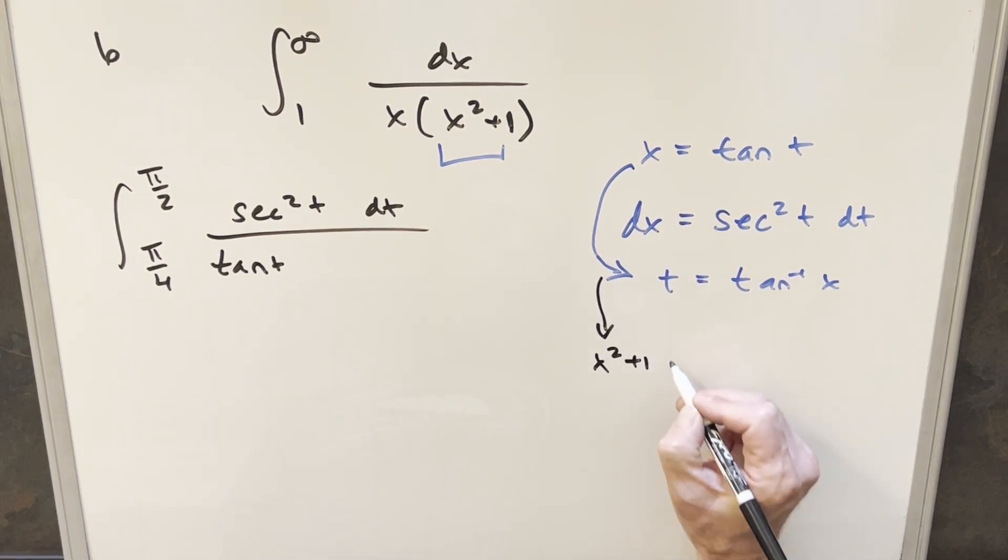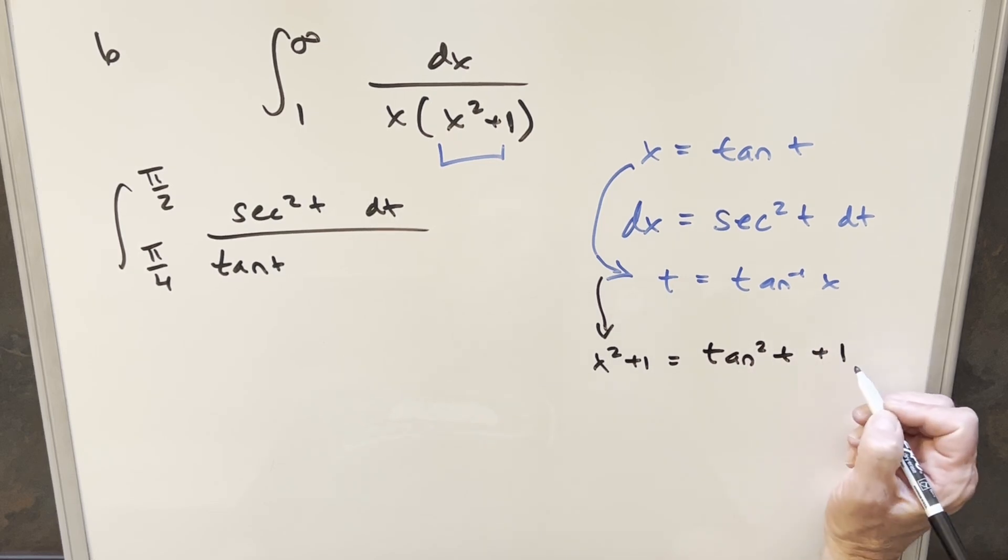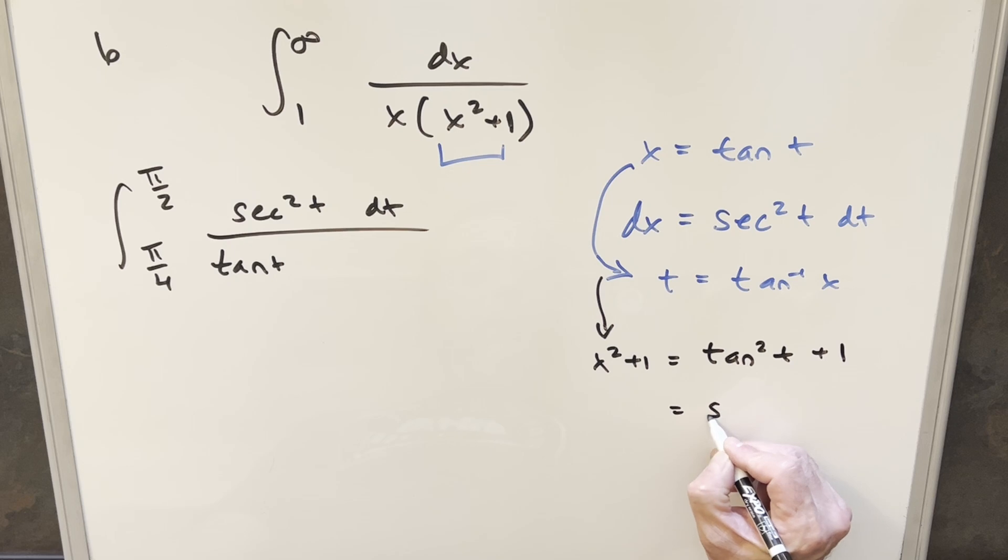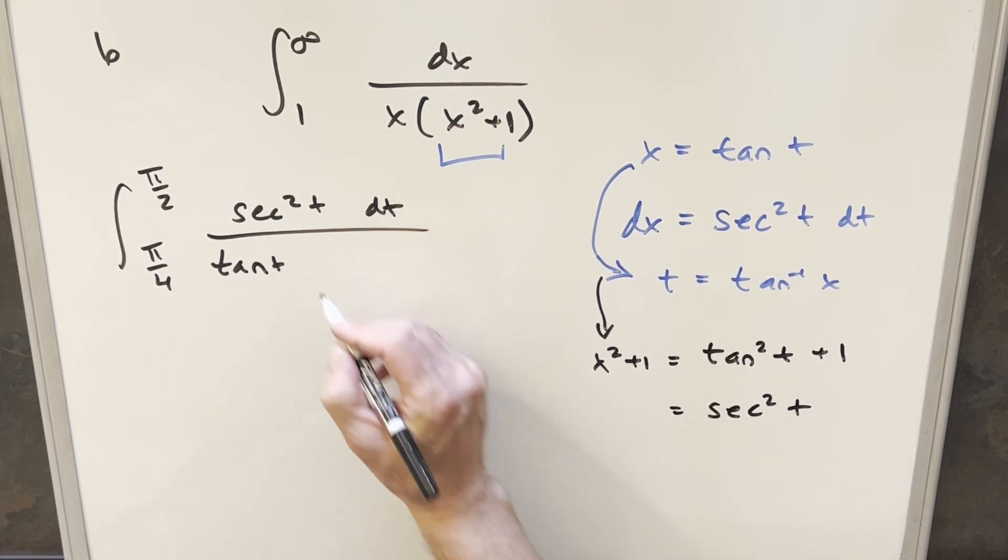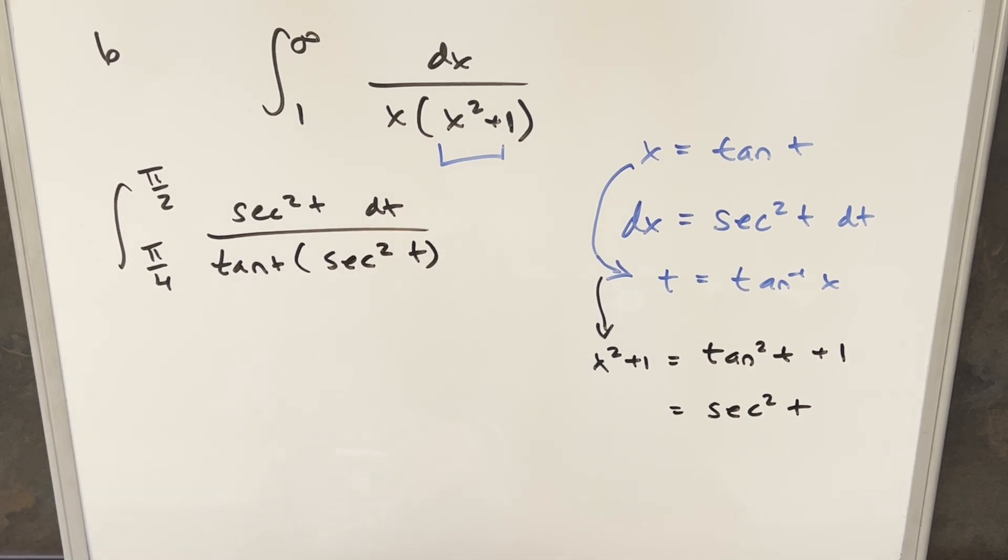So x squared plus 1 is going to be tan squared t plus 1. But we have the identity tan squared t plus 1. That's just going to be the same thing as secant squared of t. So let's plug that in right here. We're going to have a secant squared t in the denominator. So then secant squareds are going to cancel here.